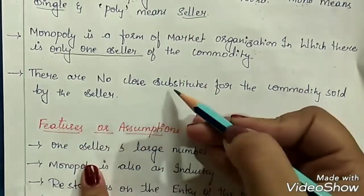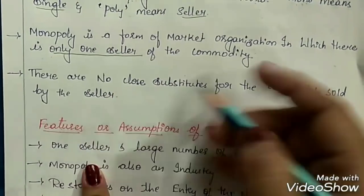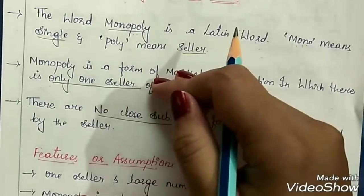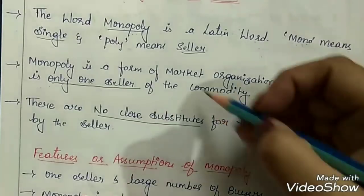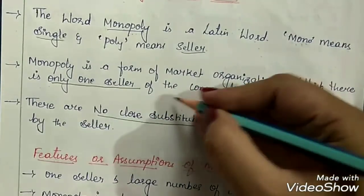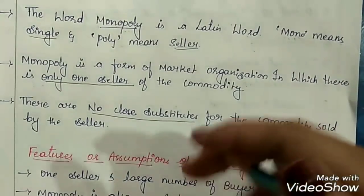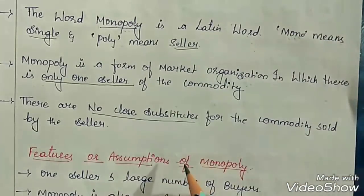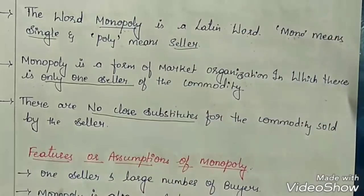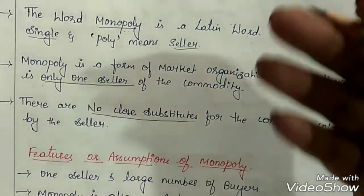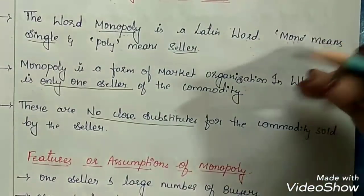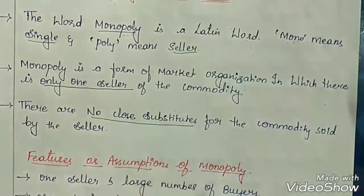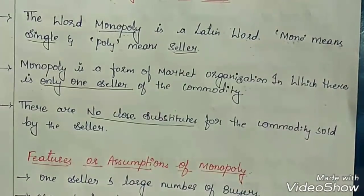There are no close substitutes for the commodity sold by the seller. This is also an important point. The commodities which the single seller is selling, there has to be no close substitutes to it. A substitute is also called an alternative product. For example, when you don't get a pen, you can write with a pencil — so pencil is the substitute for pen. When you don't get tea, you can consume coffee — so tea and coffee are substitutes to each other. Here in this form of market, there has to be no close substitutes for the commodity sold by the monopolist.